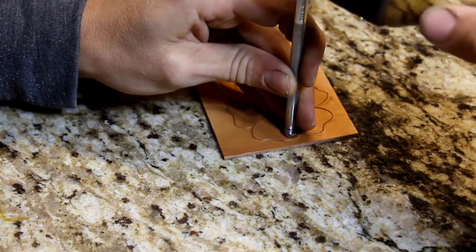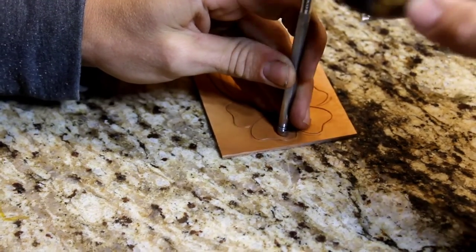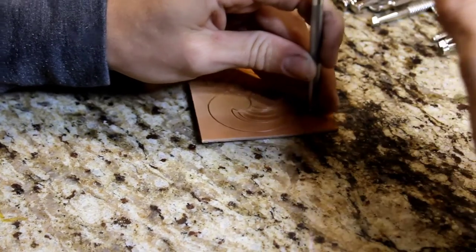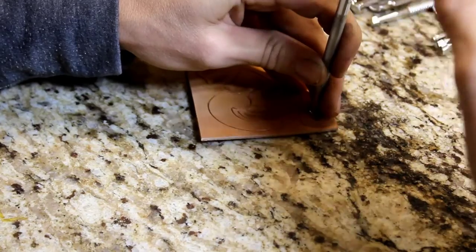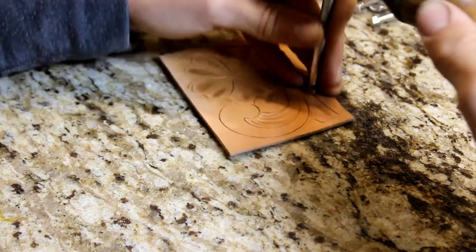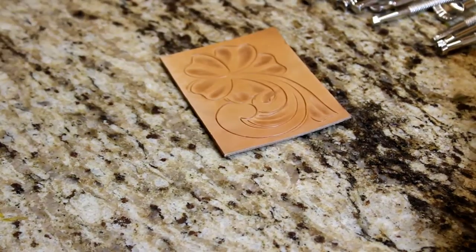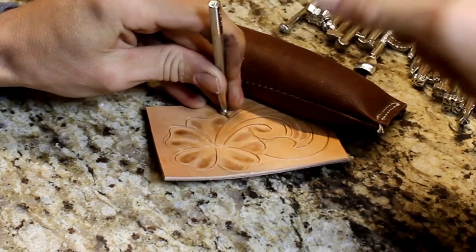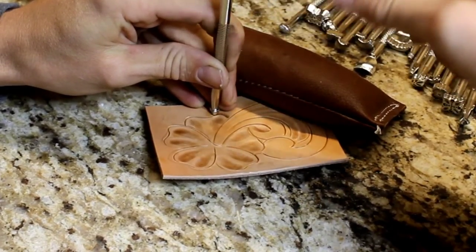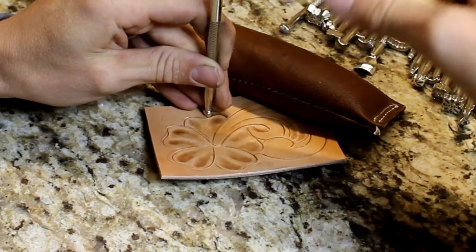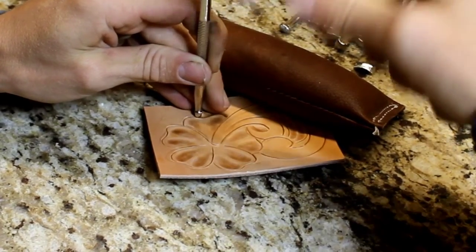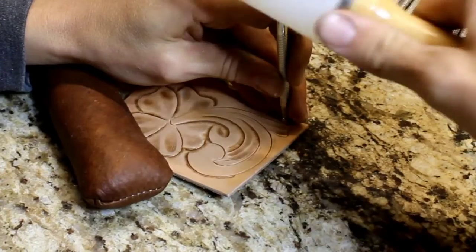All right, so now we're going to start off with that thumbprint. Get some shading going on this flower. Jump forward. Now we're getting some of those little leaves done. So now we're using that beveler. And it did leave a lot to be desired, but it worked very well for the money, that's for sure.